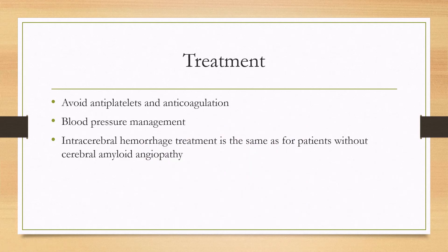Treatment involves avoiding antiplatelets and anticoagulation unless absolutely indicated — for example, if they have a stent or atrial fibrillation. If anticoagulation is needed, it's preferred to avoid warfarin and try DOACs or NOACs because of a smaller risk of intracerebral hemorrhage. Blood pressure management is also important since hypertension is one of the main causes of hemorrhage.